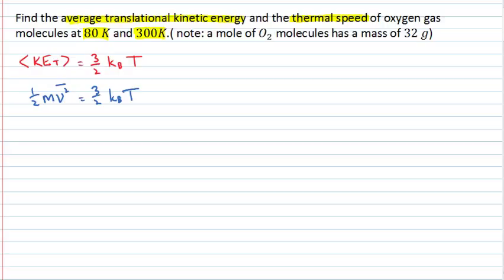then what I end up with is the halves cancel, I divide by mass, so I get three KbT divided by m is equal to the average of the velocity squared. And then I take the square root of both sides, and what I've found here is actually the square root of the average or the mean of the square, the RMS value.